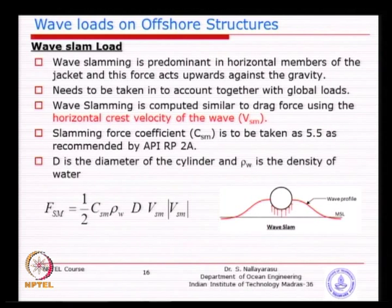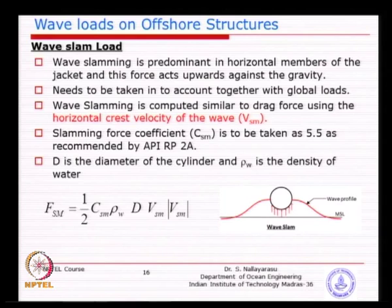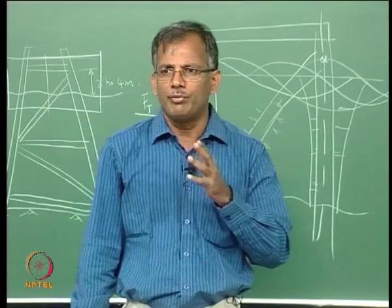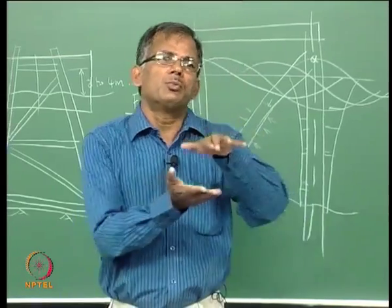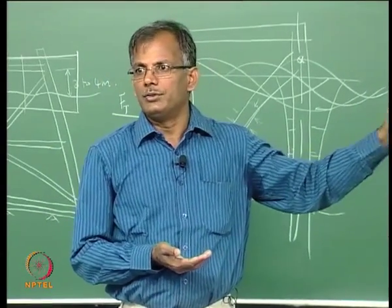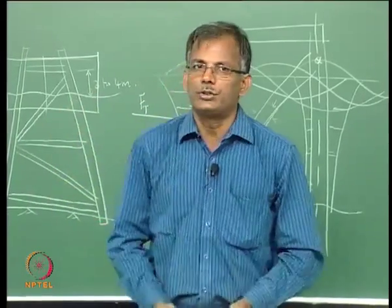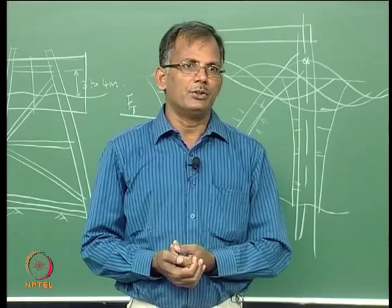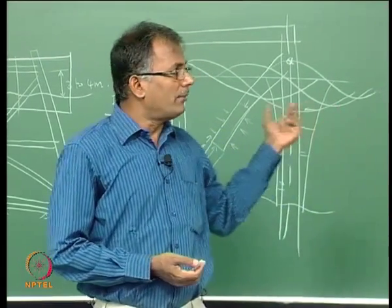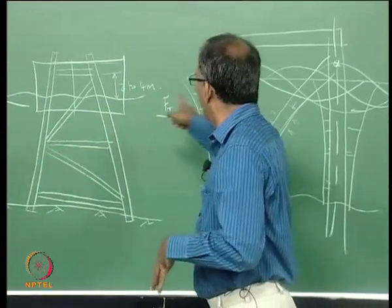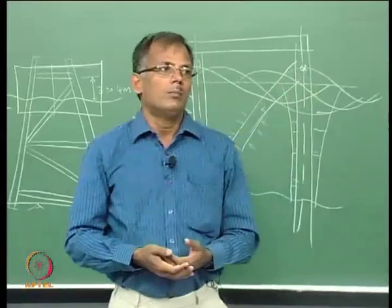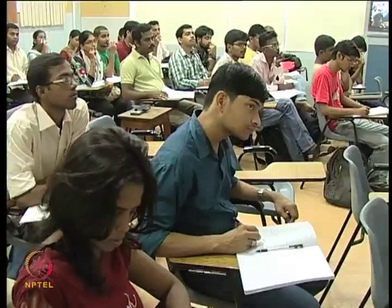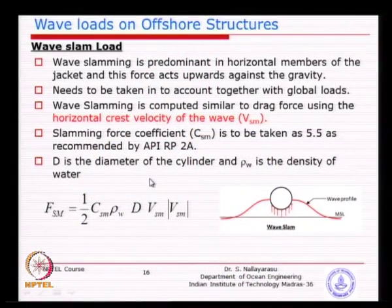The slamming force coefficient is similar to the drag coefficient, but instead of a smaller number you have a bigger number. For a simple circular section the coefficient is 5.5 - about 3 to 4 fold increase compared to the drag coefficient, because the structure is oriented very close to the surface and the water is hitting vertically upwards against gravity. Jacket horizontal members are not having too much gravity loads, so this can actually cause the member to fail by bending upwards. This needs to be taken into account while designing any structural elements in the vicinity of the water surface.